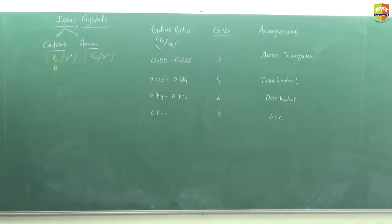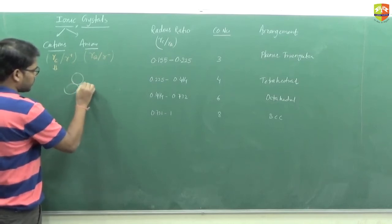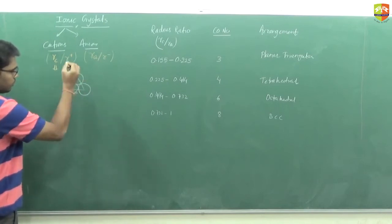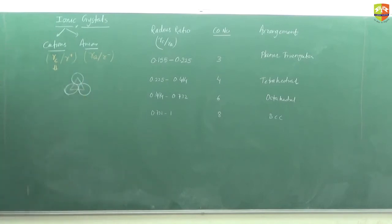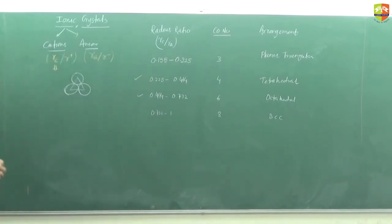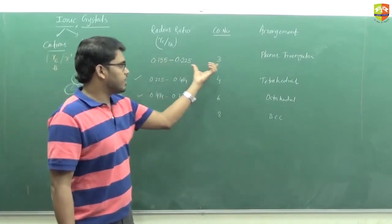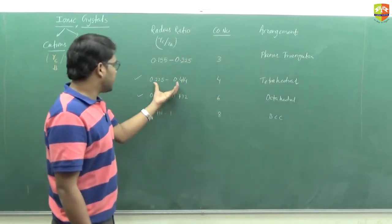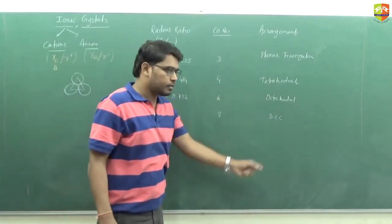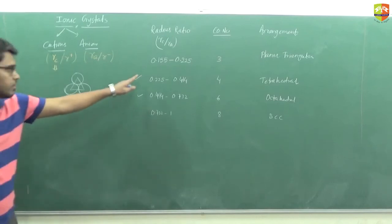What is the triangular void? If you arrange atoms like this, the void in the center is a triangular void — it is a 2D void. The main important thing is to memorize these radius ratio ranges. If you keep increasing the size, once the ratio changes into a certain range, all the cations and anions will rearrange so that the arrangement becomes tetrahedral. In three dimensions it is difficult to visualize, but you have to memorize these values.